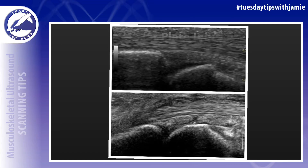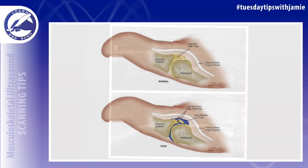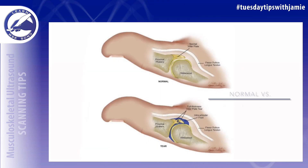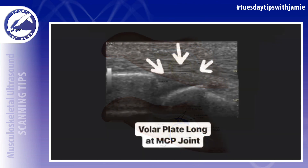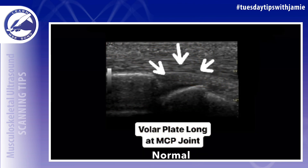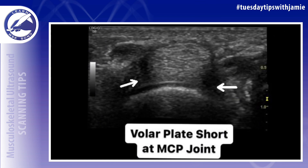Do you know what type of injuries can occur involving the volar plates in the fingers? On ultrasound, the volar plates appear as echogenic, homogeneous, fibrocartilaginous structures that run along the volar aspect of the finger joints, deep to the flexor tendons.